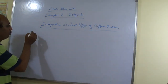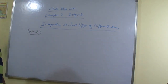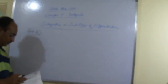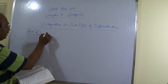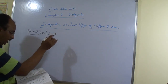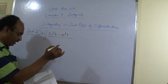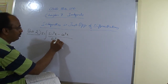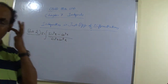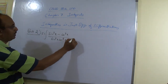Let us solve another question in this integration. The question is: integration of (sin²x - cos²x) divided by sin²x · cos²x dx. Earlier it was only sin x · cos x, but now it has become sin²x · cos²x.